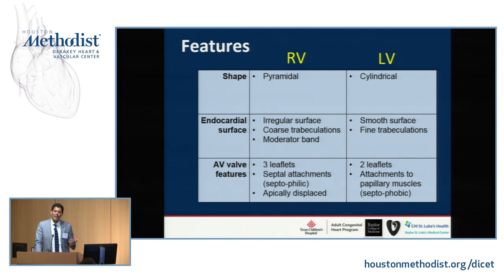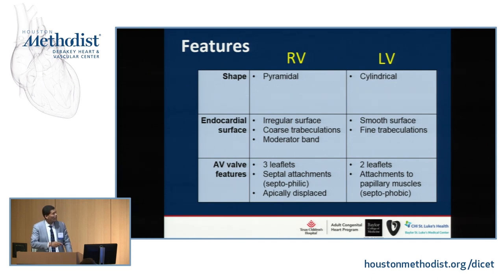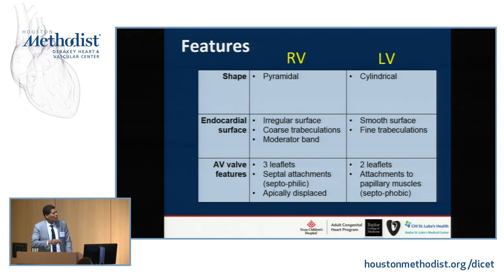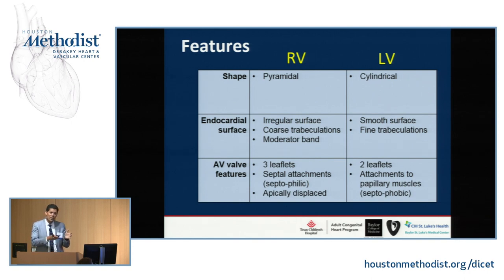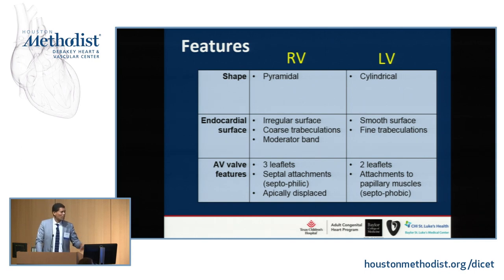The real interesting thing in this lesion is that the ventricles are where it all takes place, and you have to define what ventricle is what when you're looking at your echo. An RV is more pyramidal in shape, has more trabeculations, has a moderator band, and has three leaflets. The valve follows the ventricle — if you see three leaflets with a septal attachment, the tricuspid valve tends to be septophilic, confirming a right ventricle. The LV is more cylindrical or bullet-shaped with a smooth surface and two leaflets, and the mitral septal leaflet is septophobic.